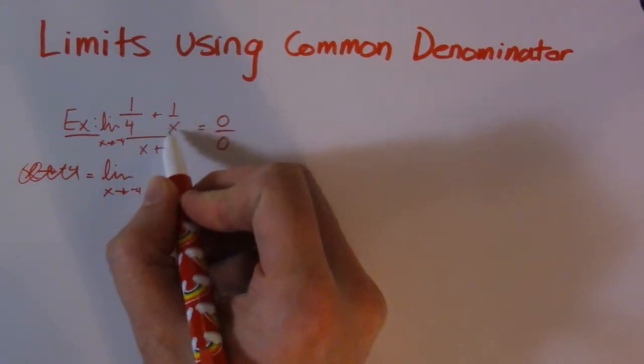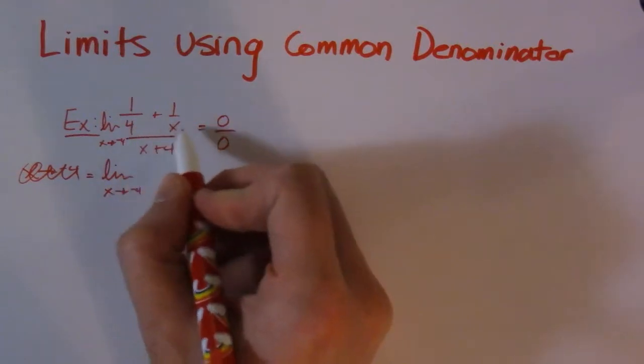and this guy needs a 4. What's this missing? What's this missing? This is missing an x, this is missing a 4. If they each had that, they'd be the same.